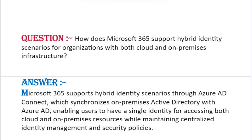Next interview question: How does Microsoft 365 support hybrid identity scenarios for organizations with both cloud and on-premises infrastructure? Microsoft 365 supports hybrid identity scenarios through Azure AD Connect, which synchronizes on-premises Active Directory with Azure AD, enabling users to have a single identity for accessing both cloud and on-premises resources while maintaining centralized identity management and security policies.